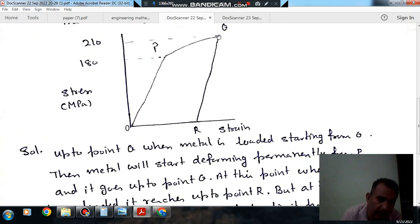And at this point, after reaching this point, there will be no permanent deformation because this is the new yield point, or new elastic limit, due to strain hardening.